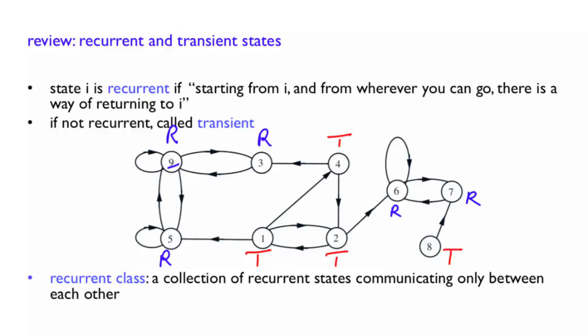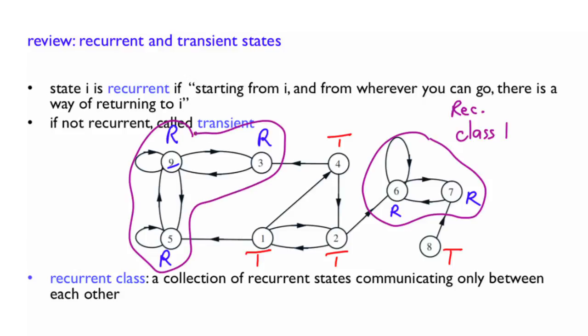So what we have seen also is the notion of a recurrent class. A recurrent class is, again, a collection of recurrent states that can communicate between each other. So here, for this specific example, we have two classes. This is one class, let's call it recurrent class 1. And this is a recurrent class, recurrent class 2.